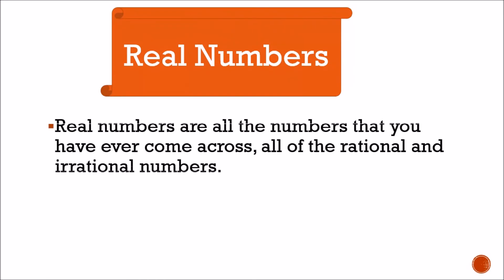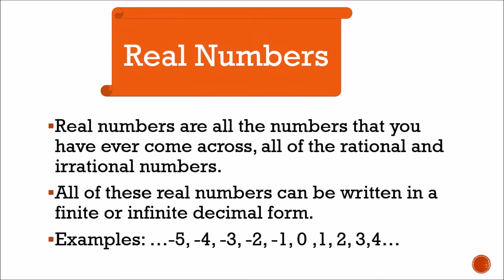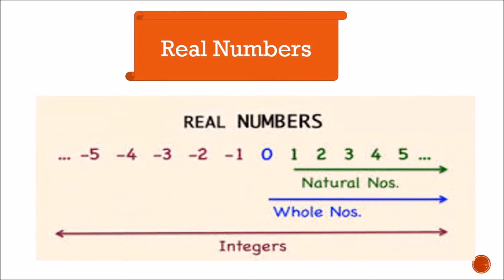Now next is real numbers. What is a real number? Real numbers are all the numbers that you have ever come across — all the rational and irrational numbers. All of these real numbers can be written in a finite or infinite decimal form. For example: minus 3, minus 2, minus 1, 0, 1, 2, 3, 4, and so on. All numbers — integers, whole numbers, natural numbers — all numbers are real numbers.